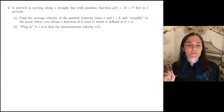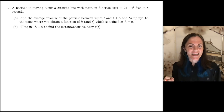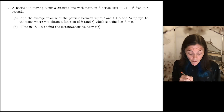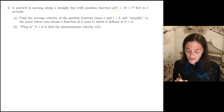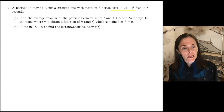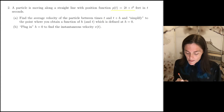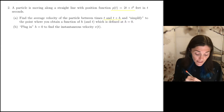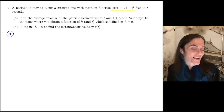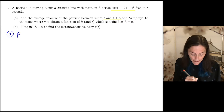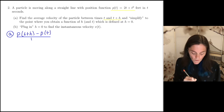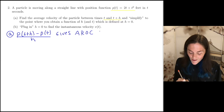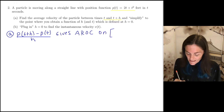Number two is from section 1.2, the prelude to instantaneous rates of change. We are given a particle moving along a straight line with position function p(t) = 2t plus t squared. We want to find the average velocity between t and t plus h, and then simplify until the expression is defined at h equals zero. This is the difference quotient: p of t plus h minus p of t, divided by h — the average rate of change on the interval t to t plus h.